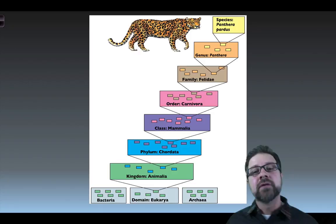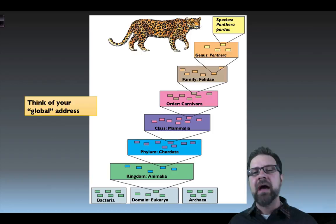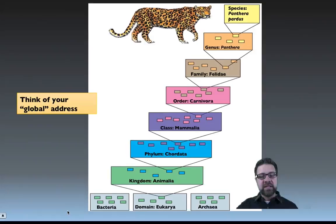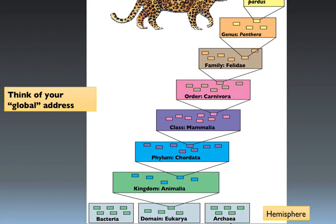To understand the idea of nested levels, let's take a look at the species Panthera pardus from the bottom and work our way up. I also want you to think of your global address — where you live — going from very general to very specific. Down at the bottom we see our three domains: Bacteria, Eukarya, and Archaea. Just like all animals live on planet Earth, we can think of our global address starting with which hemisphere we live in.